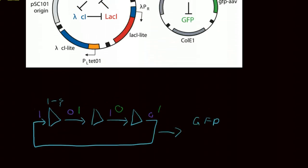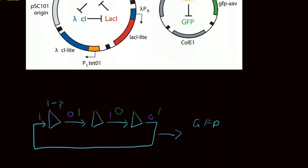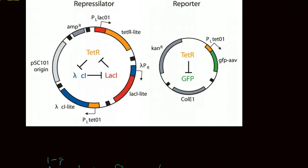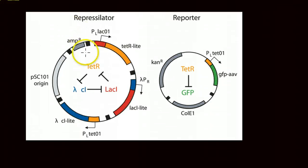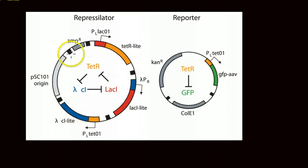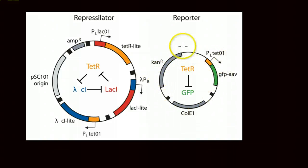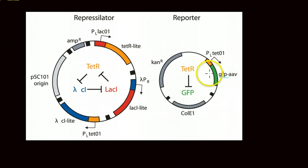This system in particular worked by putting the inverters together onto a plasmid, which would then be transformed into E. coli or yeast — in this case they used E. coli. They also have another reporter plasmid, which is basically just the GFP, denoted here with some sort of other tag alongside it.